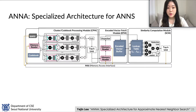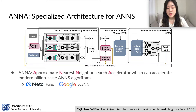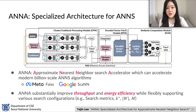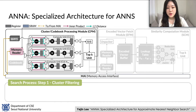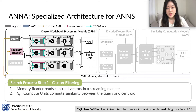Unfortunately, this two-level product quantization search cannot exploit the best of CPUs and GPUs. Thus, we present ANA, an Approximate Nearest Neighbor Search accelerator that can accelerate modern billion-scale ANNS algorithms from Meta and Google, substantially improving throughput and energy efficiency while flexibly supporting various search configurations. ANA consists of three modules: the Cluster Codebook Processing Module (CPM), the Encoding Vector Fetch Module (EFM), and the Similarity Computation Module (SCM). To support step 1, CPM reads centroid vectors in a streaming manner, passes them with the query to compute units for similarity computation, and selects the top-W most similar clusters.